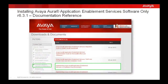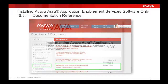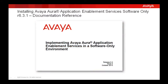The document to reference for more detail on performing this installation can be downloaded from the Avaya Support site. Go to Downloads and Documents and search for Application Enablement Services Installation Documentation. Locate the document titled Implementing Avaya Aura Application Enablement Services in a Software Only Environment and download it. The Release 6.3.1 document should be dated October 2013.